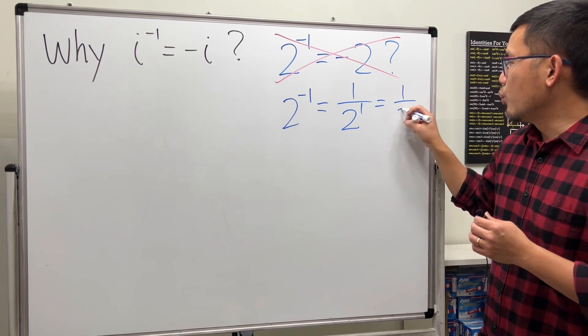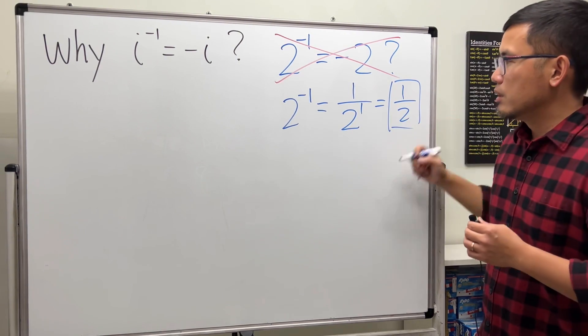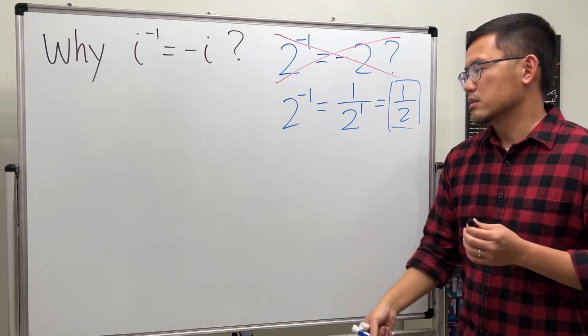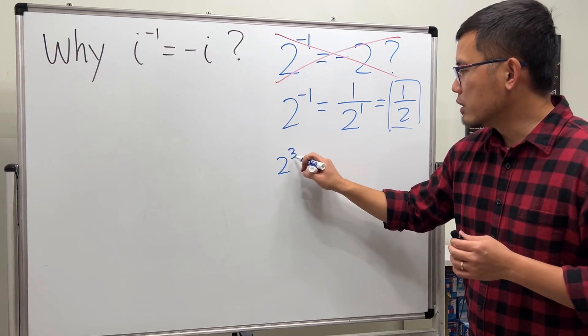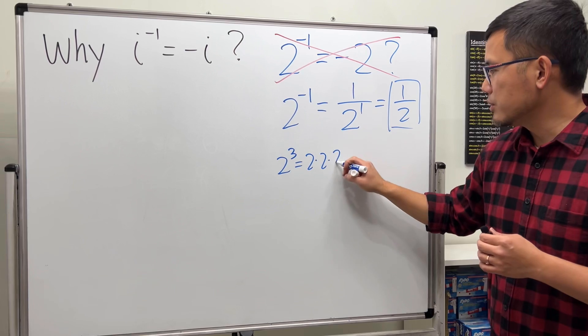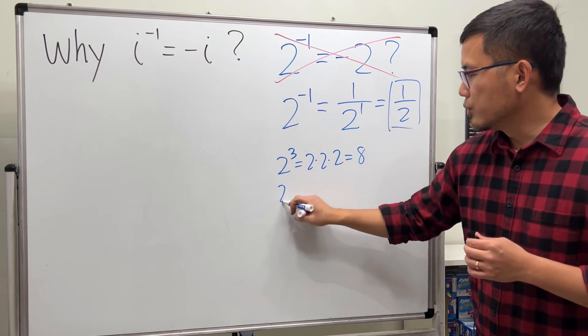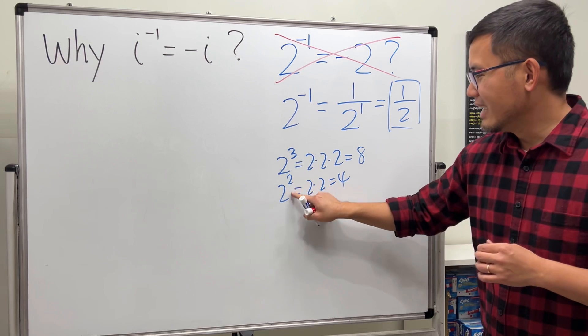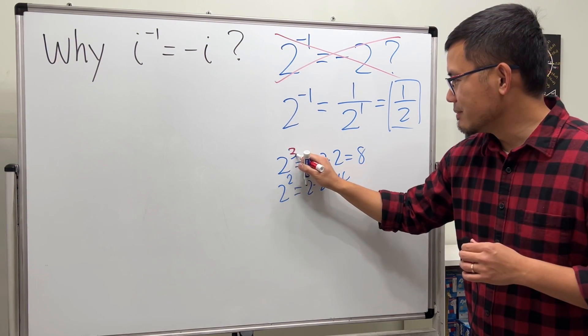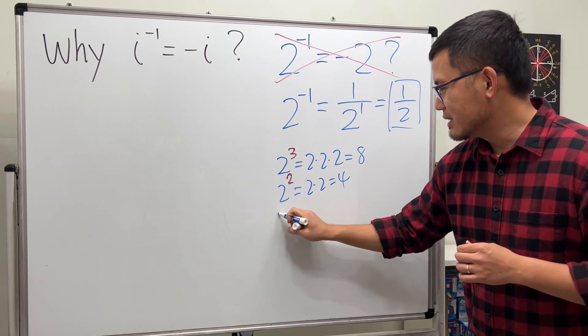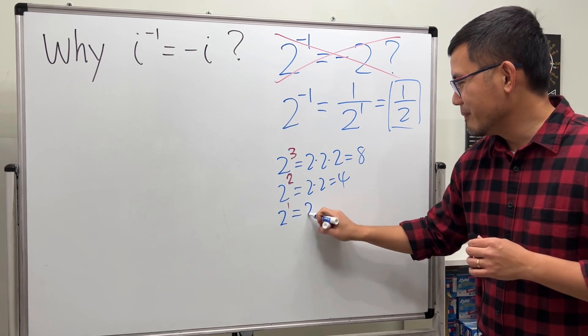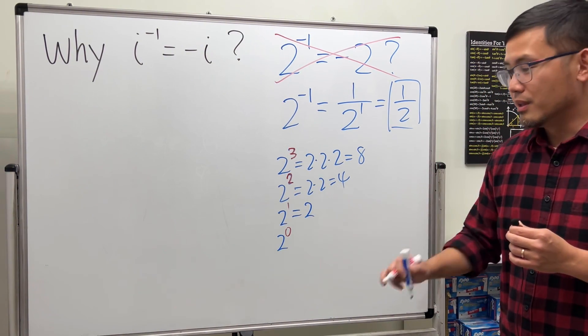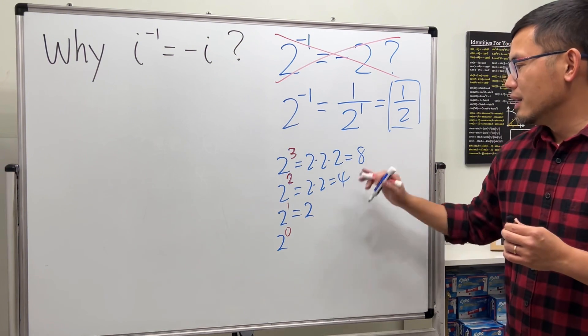Just real quick, why is this the case? You can look at a pattern. If you have 2 to the third power, this means 2 times 2 times 2, which is 8. 2 to the second is 2 times 2, which is 4. Then 2 to the first is 2, and then 2 to the 0. What's 2 to the 0? It's not 0. Take a look right here.